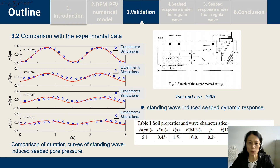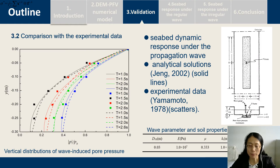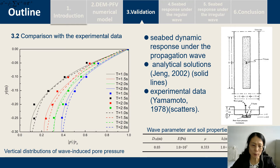The second validation is the comparison with experimental data. Here is the sketch of the experimental setup. We study the wave-induced seabed dynamic response. These are the soil properties and wave characteristics. This shows the comparison of the wave-induced seabed pore water pressure. The numerical simulations agree well with the experimental data. The dashed line is the analytical data, the dots are the experimental data, and the solid line is the simulation result. We can see that our simulation model is correct.